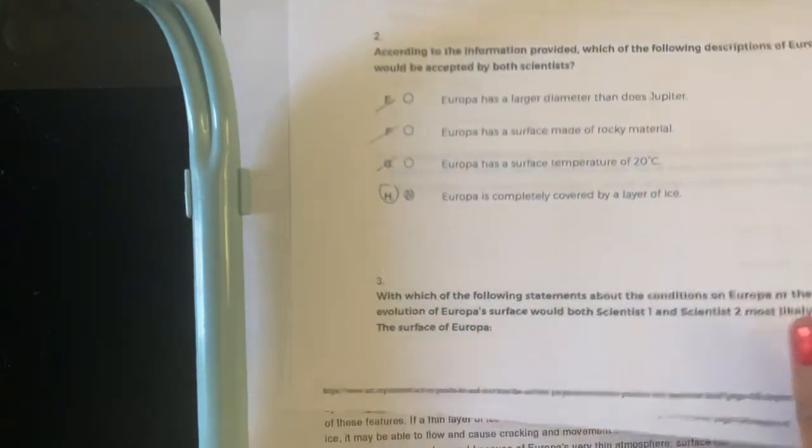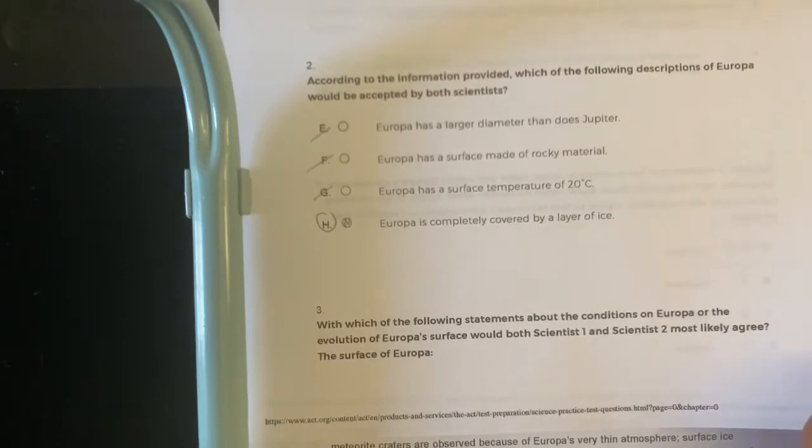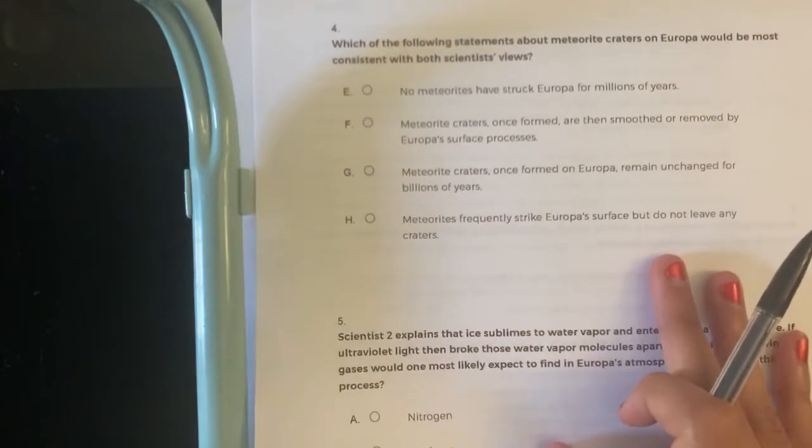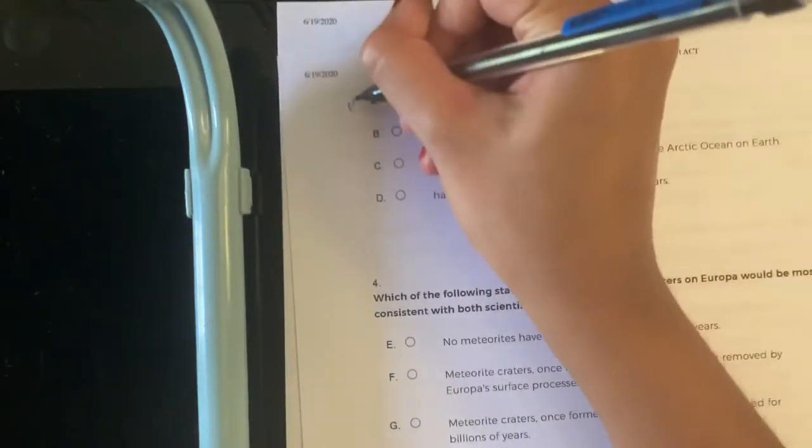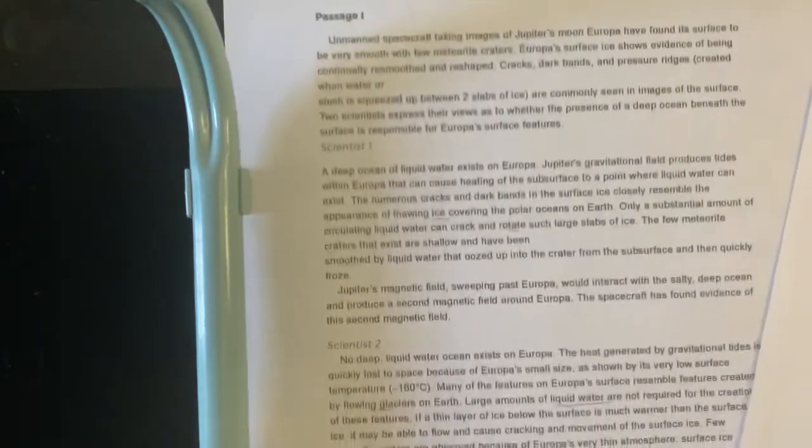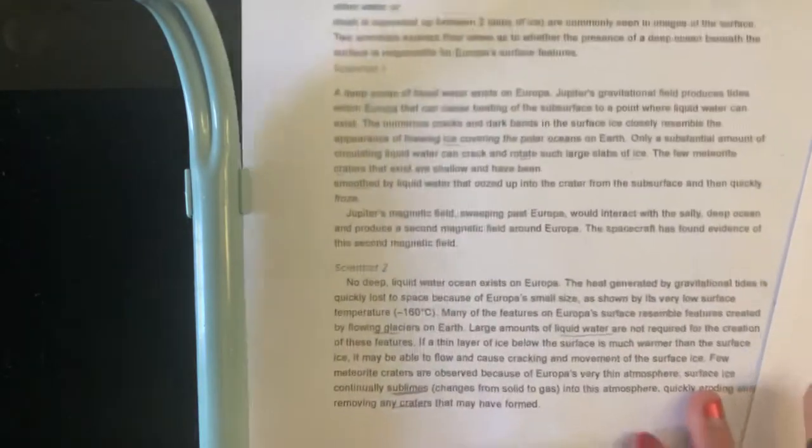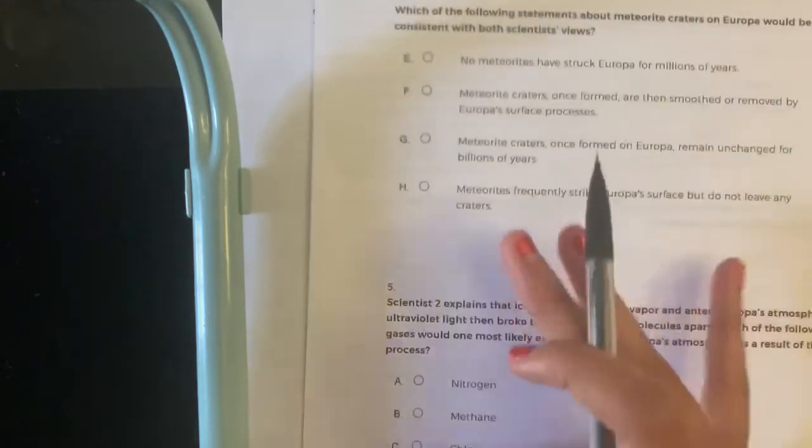So number three. With which of the following statements about the conditions on Europa or the evolution of Europa's surface would both scientists most likely agree? The surface of Europa is shaped by the movement of ice. I would say this is a maybe because they talk about how thawing ice is covering the polar oceans, there's large slabs of ice. Over here, liquid water is not required, sublimation of craters, flowing glaciers. So I would say this is a maybe. It's covered with meteorite craters? Is it covered with meteorite craters? No.